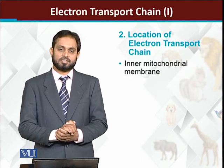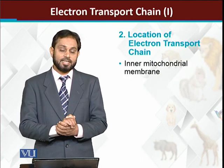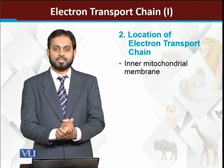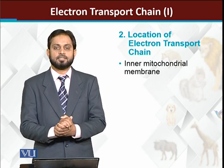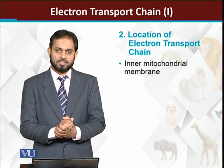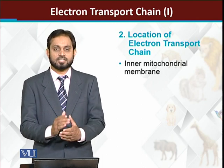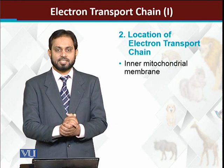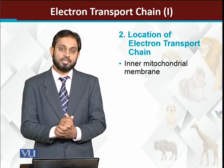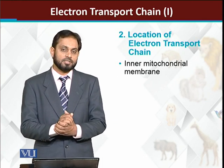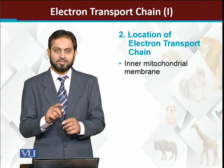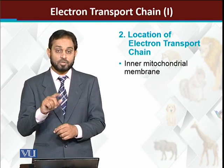What is the location of the Electron Transport Chain in animals? Here we are going to discuss animals. In animals, the Electron Transport Chain is present in the mitochondria, specifically in the inner membrane of the mitochondria. Mitochondria has two membranes: the outer membrane and the inner membrane, which is in a folded form.